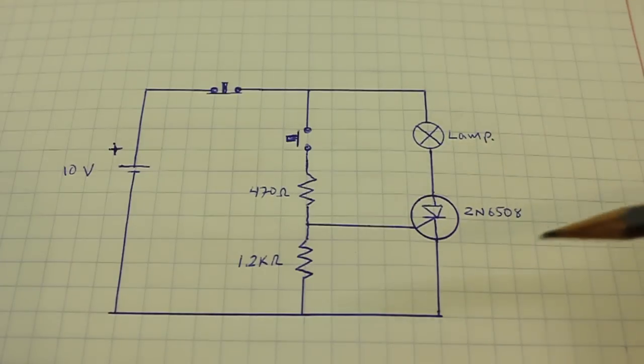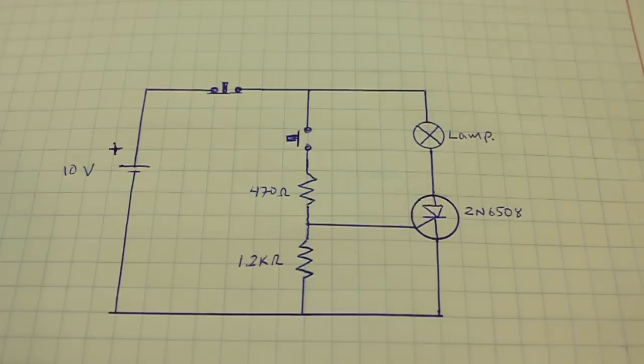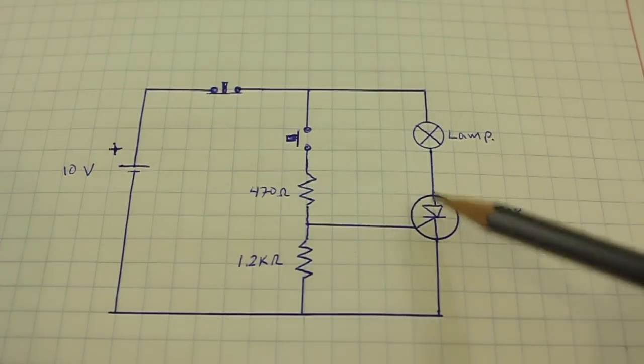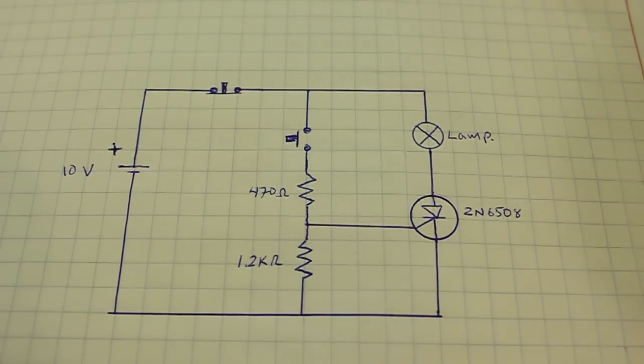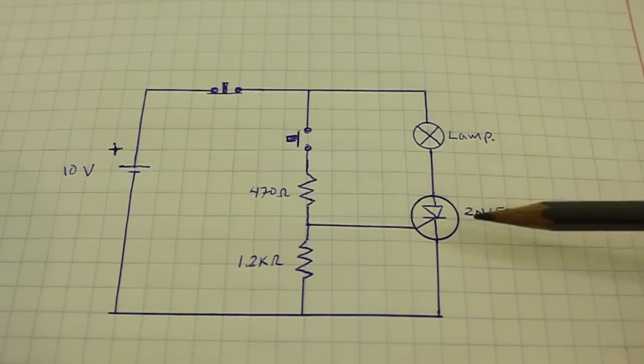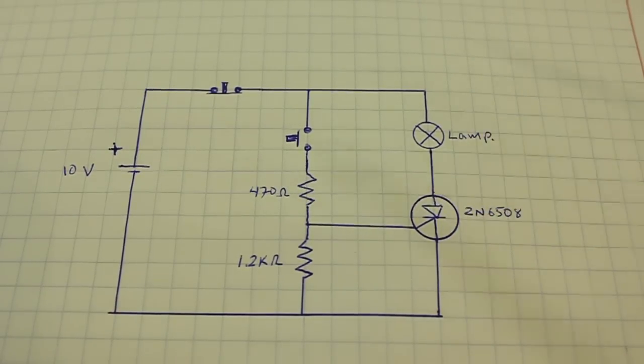Now, if we want to turn off the lamp, we must interrupt the flow of current through the thyristor. So we press momentarily this other switch, the current stops and the thyristor goes off and so does the lamp.